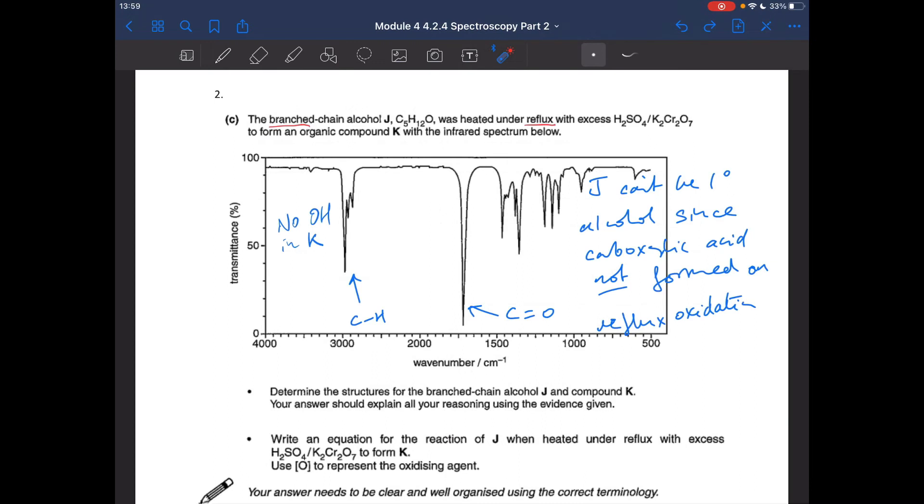Moving on to question 2 now. Quite similar actually to question 1. Less to process I suppose because we only have the infrared spectrum. We don't have anything else. So we're told the branched chain alcohol J, there's its molecular formula, was heated again under reflux with the excess oxidizing agent. And it forms K. And that's the infrared spectrum of K.